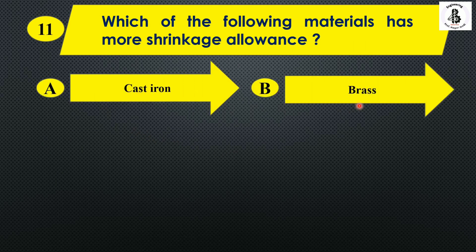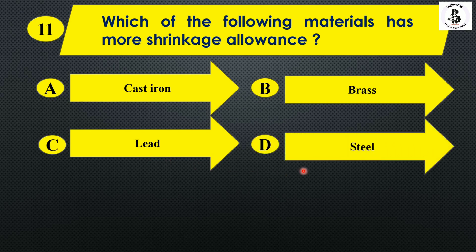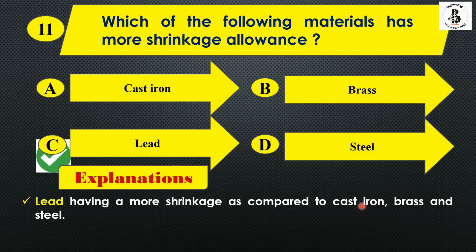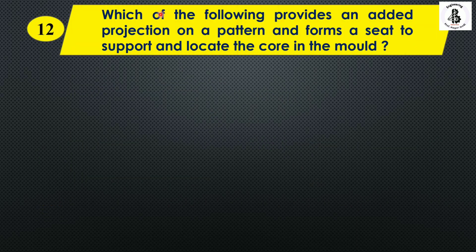The next question: which of the following materials has more shrinkage allowances — option A: cast iron; option B: brass; option C: lead; option D: steel. Lead has more shrinkage compared to cast iron, brass, and steel, so the right answer is option C.